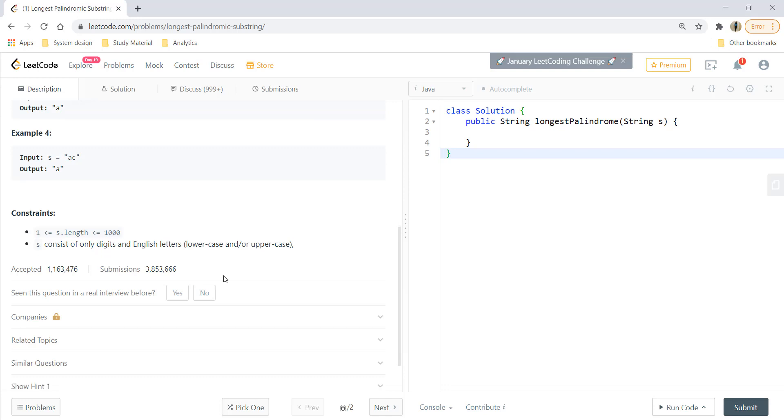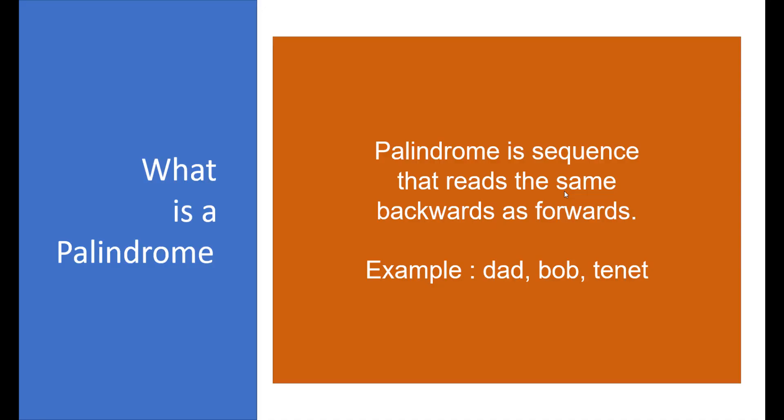So let's see how we can solve this question. The first and foremost thing that we need to know is what is a palindrome. According to the definition, palindrome is a sequence that reads the same backwards and forwards. If you see the examples dad, bob, tenet are full palindrome strings.